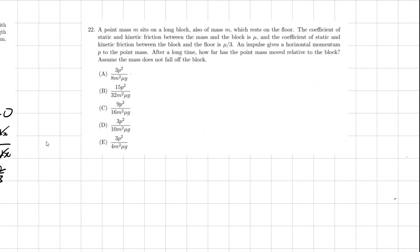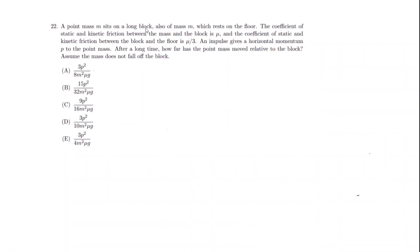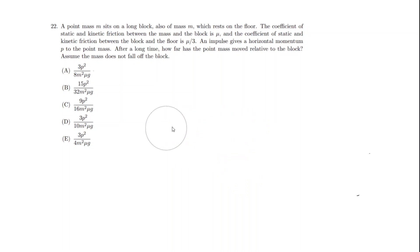Let's move on to the last problem, number 22. A point mass m sits on a long block, also with mass m, which rests on the floor. The coefficient of static and kinetic friction between the mass and the block is μ, and between the block and the floor is μ/3. An impulse gives a horizontal momentum P to the point mass, so its velocity is P/m. After a long time, how far has the point mass moved relative to the block?